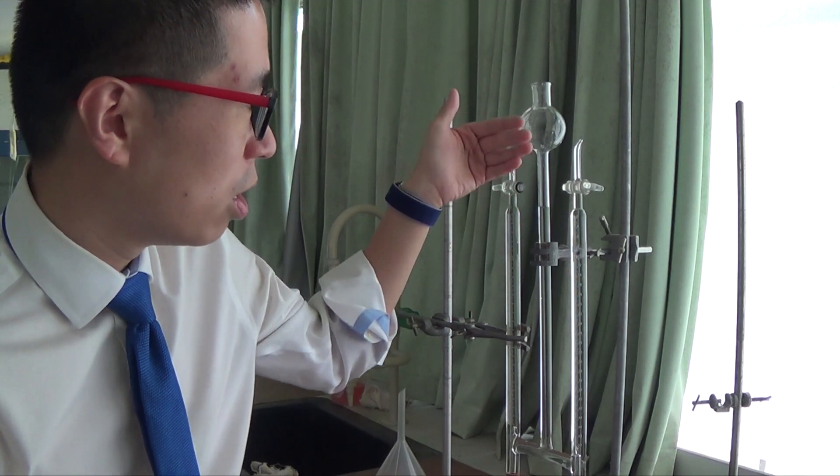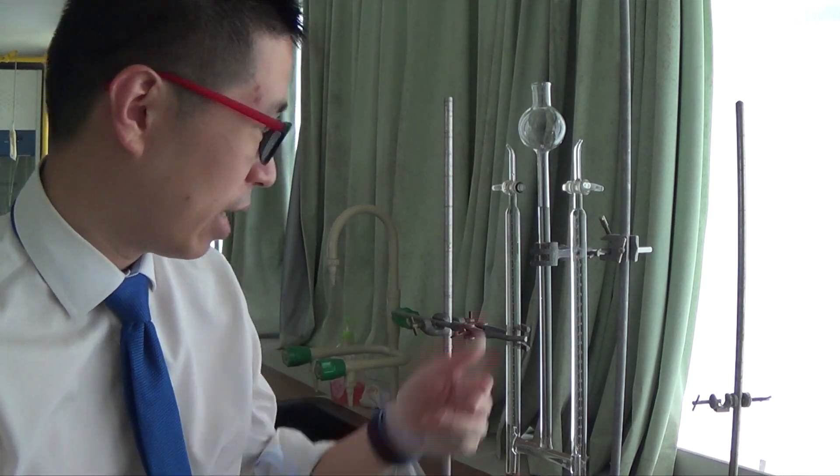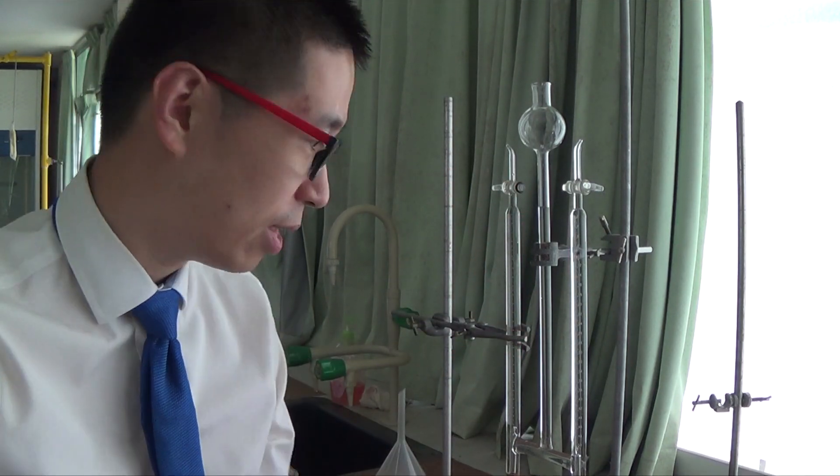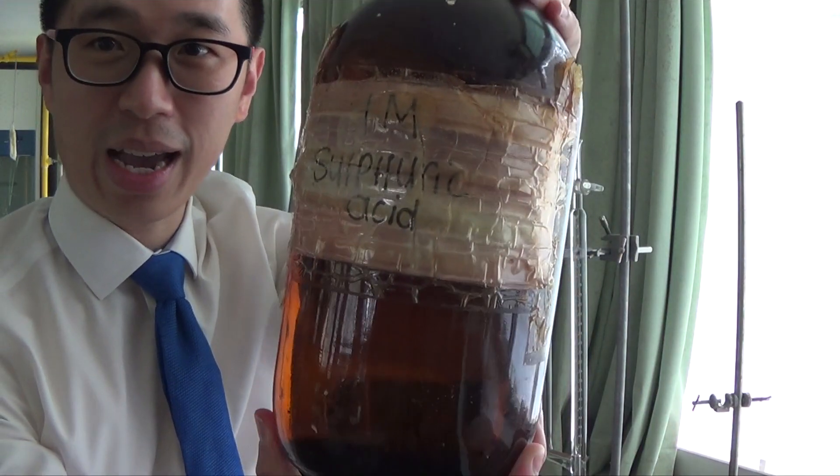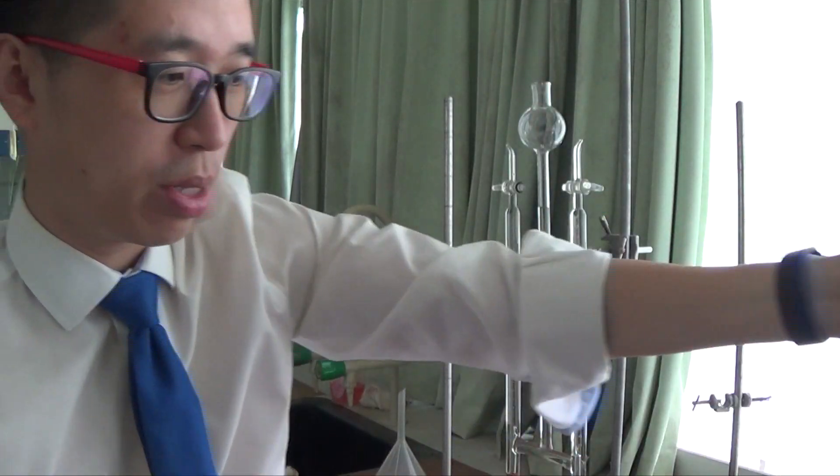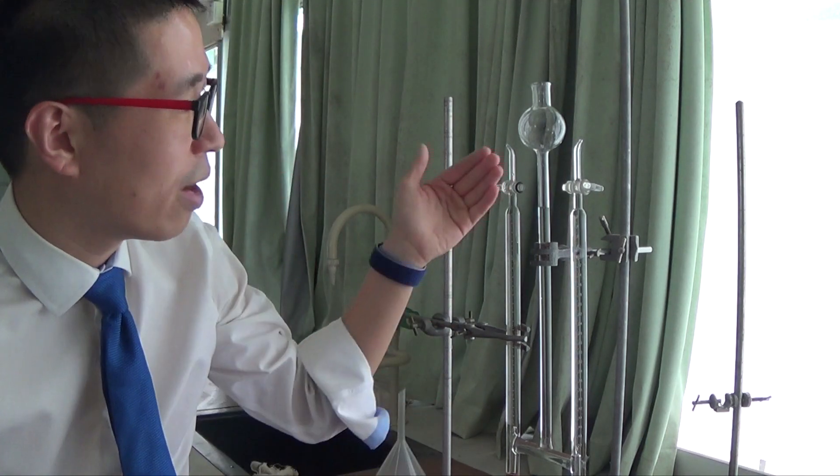This is something called a Hoffman voltammeter. It's basically an electrolysis setup. I have an electrolyte which is 1 molar sulfuric acid, so 1.0 mol per dm³ sulfuric acid. Sulfuric acid is our electrolyte. So it's the stuff that we are trying to electrolyze.